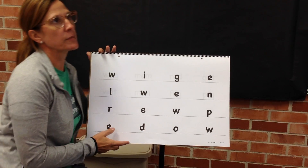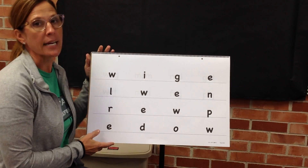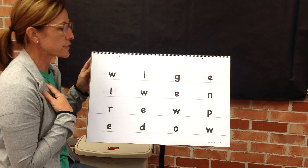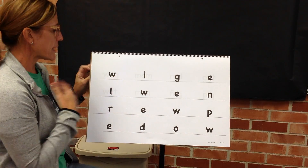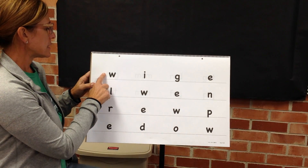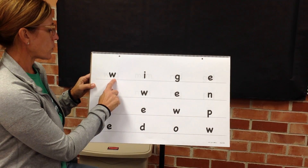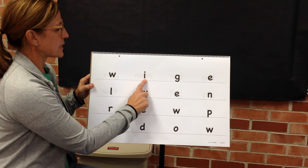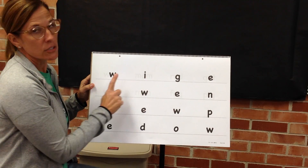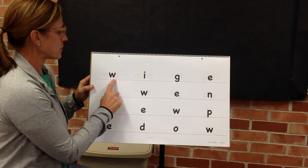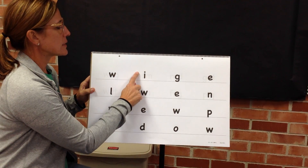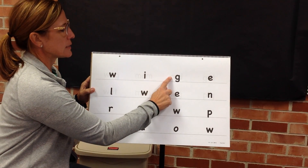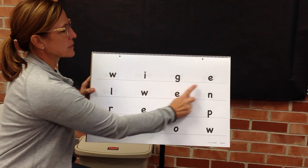Okay, next we will practice saying sounds for some letters. I will model the first two. My turn. Sound. O. Sound. I. Your turn. Sound. O. Sound. I. Sound. G.